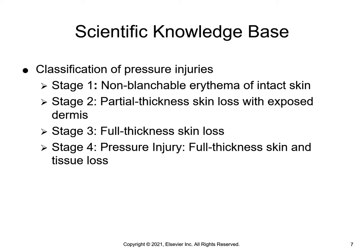Stage three pressure injury is a full thickness skin loss where adipose tissue is visible in the ulceration, along with granulation tissue and rolled wound edges. Slough or eschar may be visible. The depth of tissue damage varies by anatomical location. Areas of significant adiposity can develop deep wounds. Undermining and tunneling may occur at this stage.